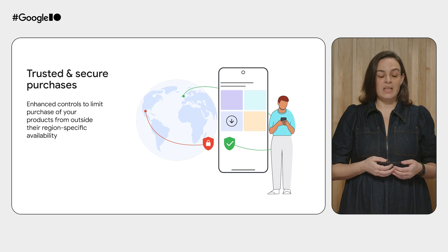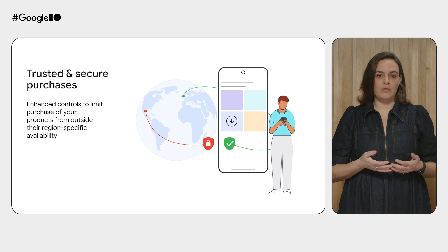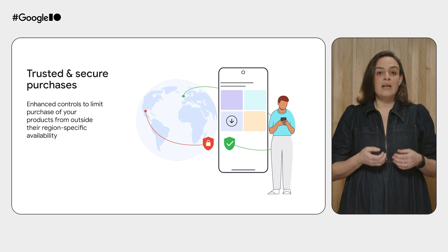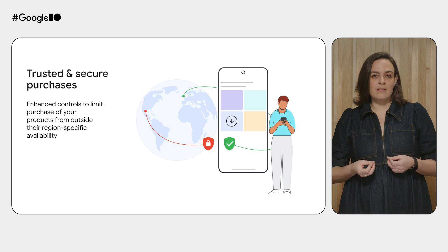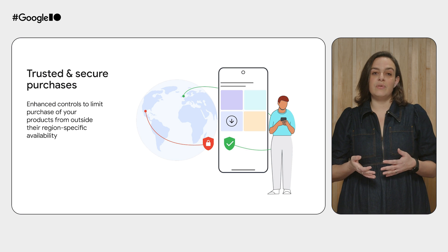Business growth can also sometimes attract bad actors — for example, those actively looking for price-arbitrage opportunities. This can happen when bad actors find an opportunity to buy products at a lower price point by purchasing from a different country than their own. We have added measures that prevent exploitation of regional price differences by enhancing developers' ability to restrict buyers from purchasing products from a different region or country. Now you can offer localized pricing and promotions with confidence, knowing that any licensed content is only consumed by users who are eligible to do so.